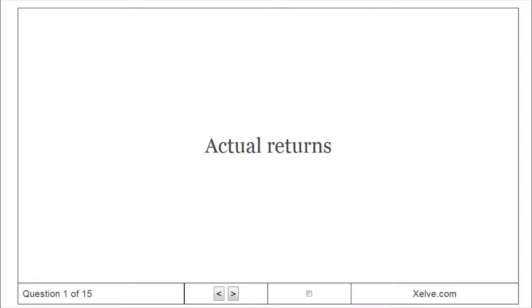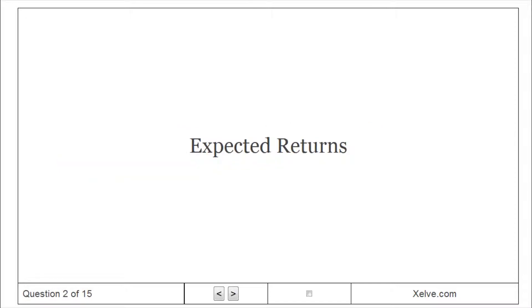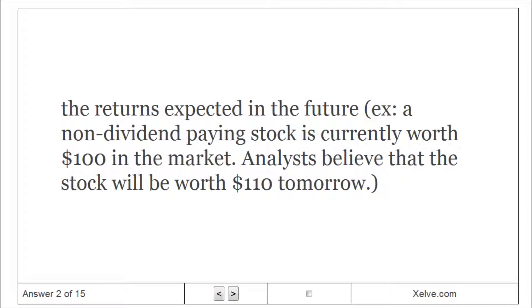Actual returns: returns that have actually been realized, also called historical returns. Expected returns: the returns expected in the future.